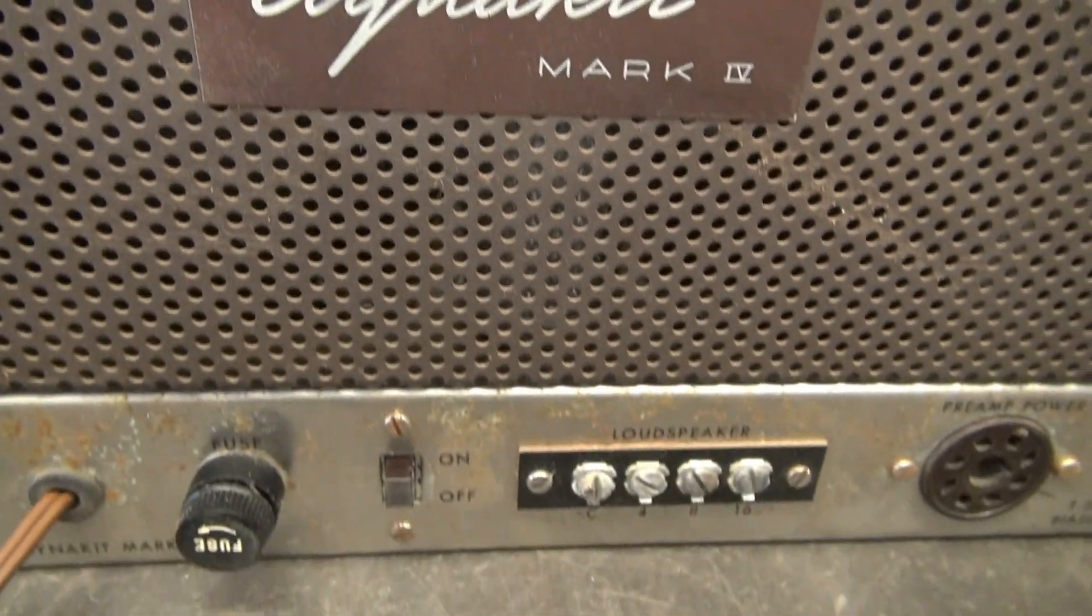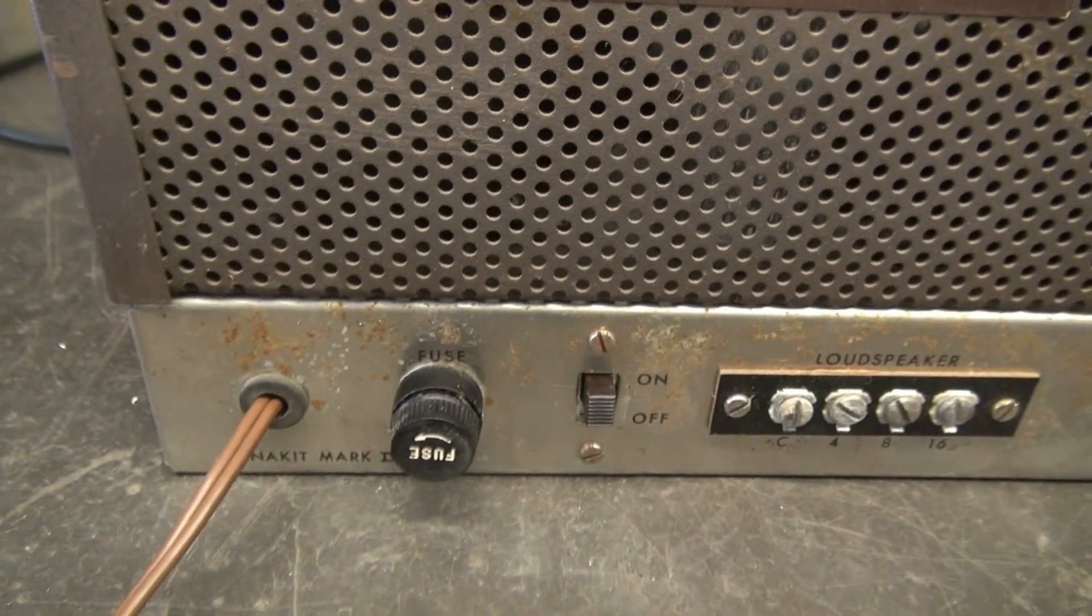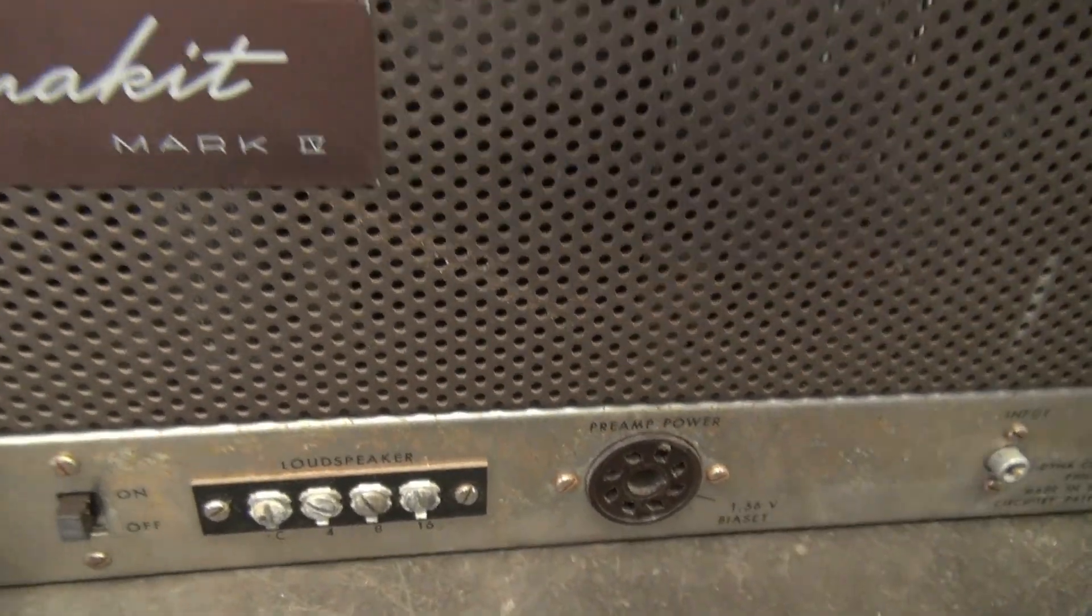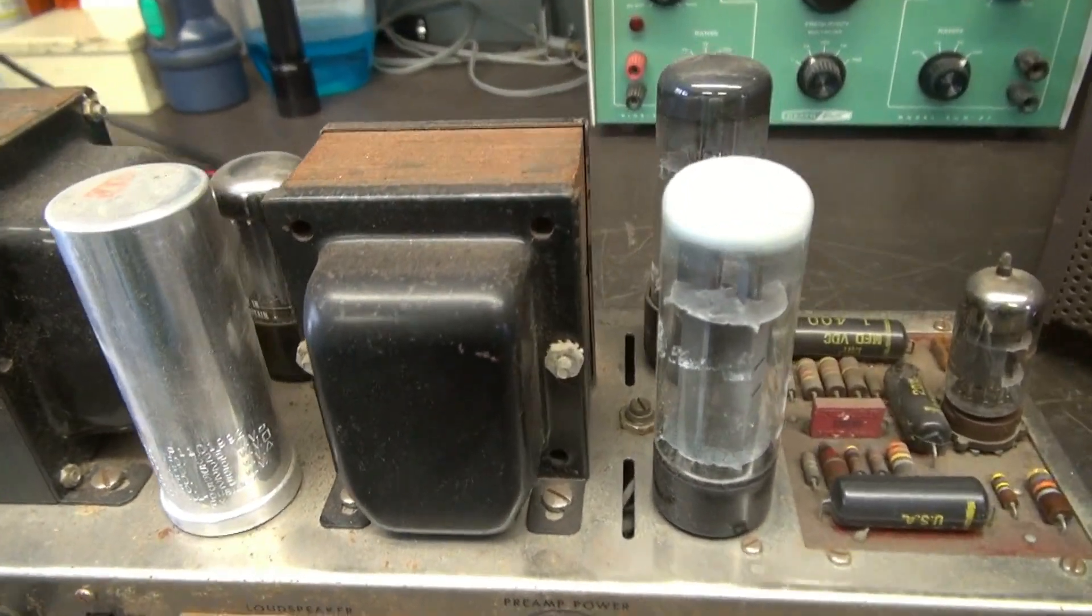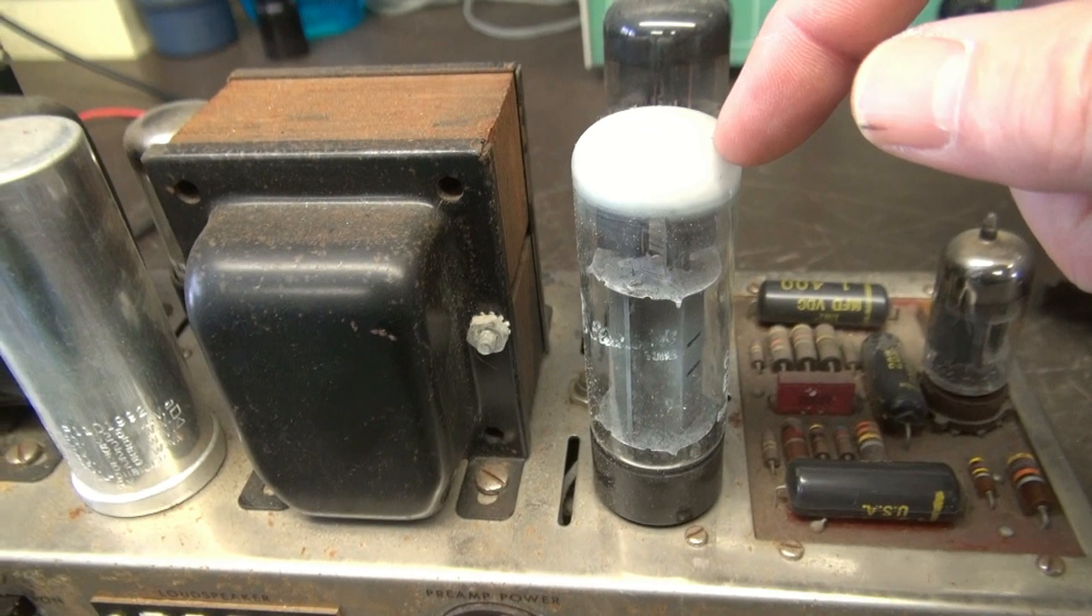So here's the Mark IV. Not in too bad a condition. You can see a little bit of spot rust on the chassis. Take the top off and immediately you see we got a blasted tube here. Lost his vacuum.